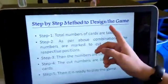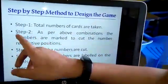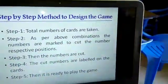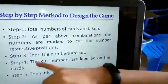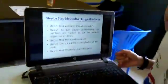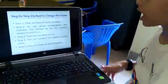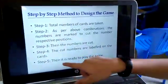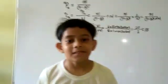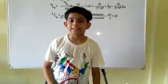Step-by-step method to design the game: Step 1 — total number of cards are taken. Step 2 — as per the combinations, the numbers are marked to cut the positions. Step 3 — the numbers are cut. Step 4 — the cut numbers are labeled on the cards. Step 5 — it is ready to play the game. If you like this video, please like, subscribe, and share this video with your friends and relatives. Bye everybody.